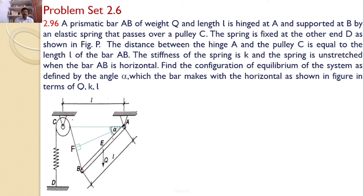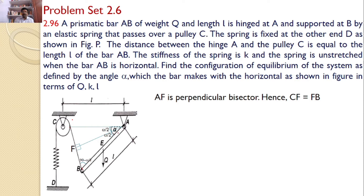These two angles are alpha by 2 and alpha by 2, and since it is a perpendicular bisector, this angle is 90 degrees and this angle is also 90 degrees. Since this is the right angle and this is alpha by 2, this angle is 90 minus alpha by 2. We will consider right angle triangle AFB. AB is L, this angle is 90 minus alpha by 2, and this angle is alpha by 2. Hence, sin(alpha/2) equals FB divided by L — opposite side divided by hypotenuse.